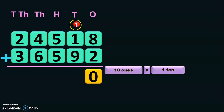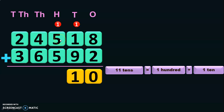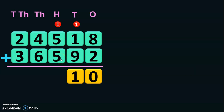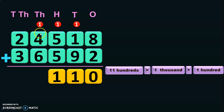Next, add the digits in the tens place: 1 plus 1 is 2, and 2 plus 9 is 11 tens. When you regroup 11 tens it will be 1 hundred plus 1 ten, so 1 ten is retained in the tens place and 1 hundred is taken as a carry-over to the hundreds place. Next, add the digits in the hundreds place: 1 plus 5 will give you 6, and 6 plus 5 will give you 11 hundreds. 11 hundreds can be written as 1 thousand plus 1 hundred, so 1 hundred is retained in the hundreds place and 1 thousand is taken as a carry-over to the thousands place.